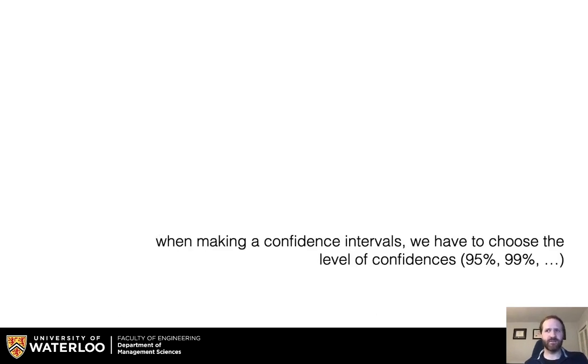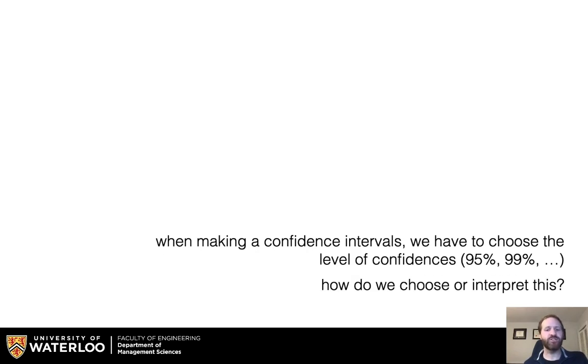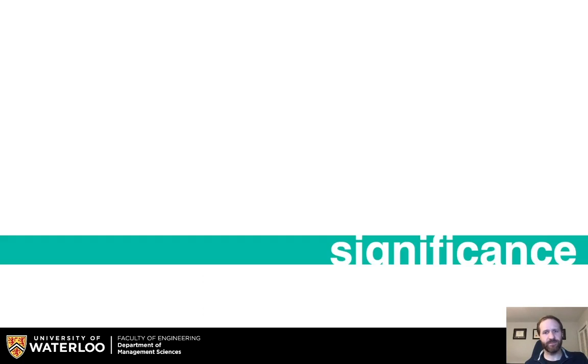When making a confidence interval, we have to choose the level of confidence — 95%, 99%, etc. How do we choose or interpret this? This is where we get to significance.